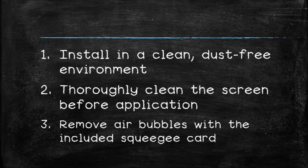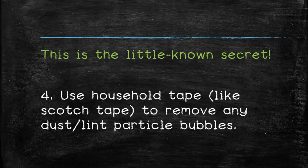After you've applied the screen protector to your phone, use a squeegee card or a credit card wrapped in the cleaning cloth to smooth out the air bubbles. And here's the secret step.